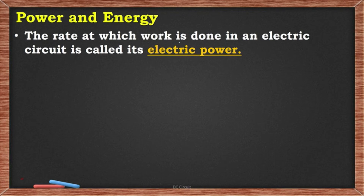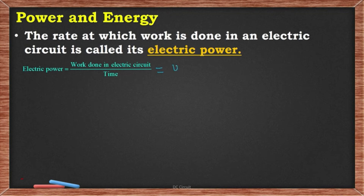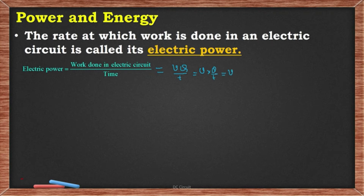Electrical power is the total work done in an electrical circuit. Work done is: one volt raises one coulomb of charge. So P = V·Q/T = V·I. By Ohm's law, this can also be written as V²/R or I²·R. The unit of electrical power is watts.